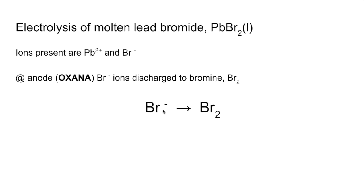Now let's look at the half equation. We're going from Br minus to Br2. This isn't balanced yet because we've only got one Br on the left but two on the right, so the first thing is to balance the atoms: we put a 2 in front of Br minus. Half equations also have to balance for charge — we've got a 2 minus charge on the left and no charge on the right, so we use electrons to balance the charge. We need 2 electrons on the right, giving us 2 minus on both sides.